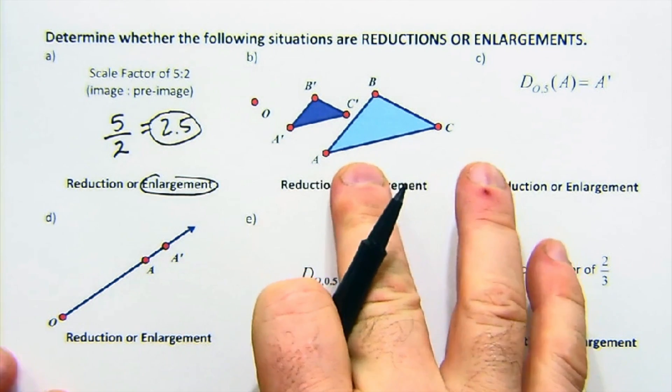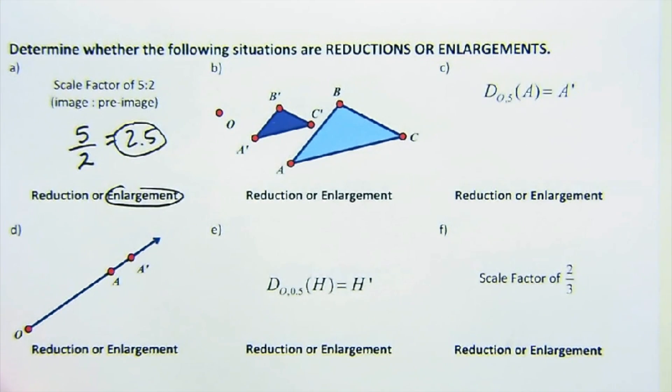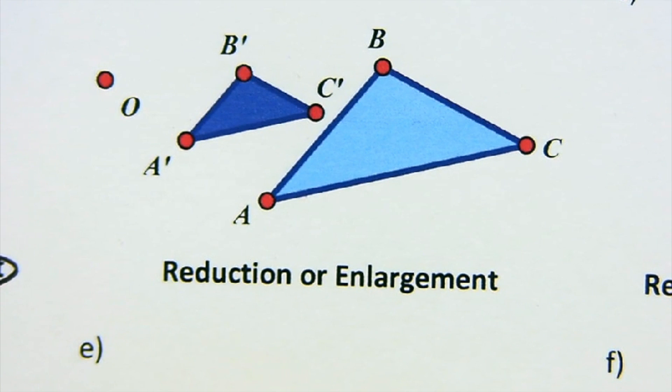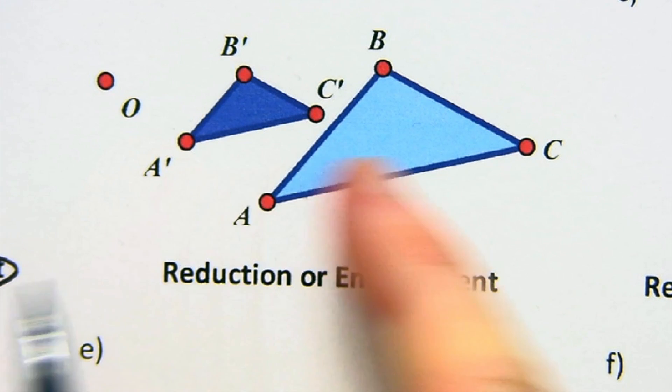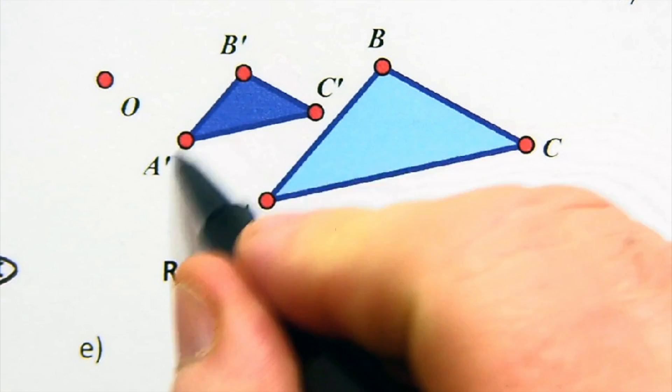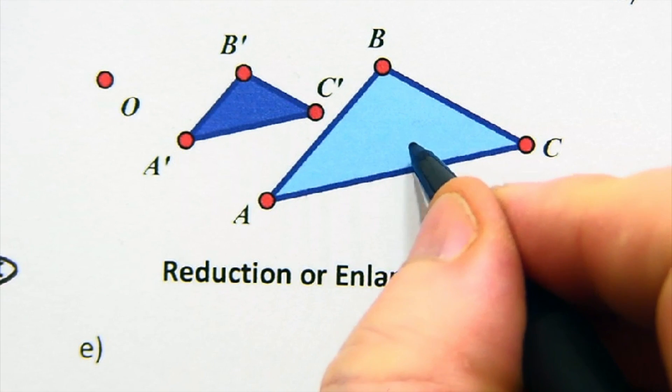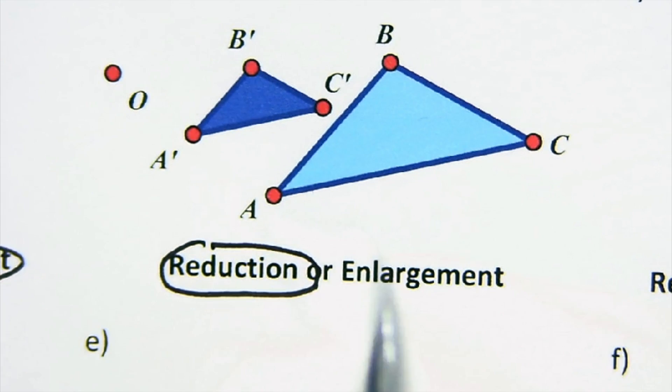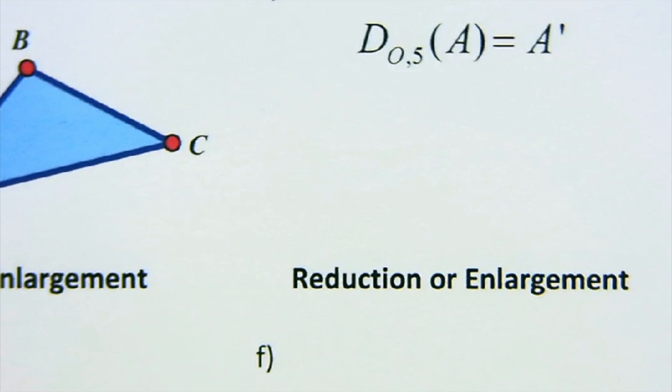And when you have shapes, you can kind of look at their notation. A lot of students actually will call this an enlargement because the little guy got bigger. But notice who's got the primes on it, the B prime, the A prime. That means this was the pre-image and this is the image. And so this, of course, is a reduction. Kind of a tricky little scenario there.